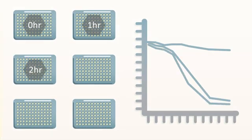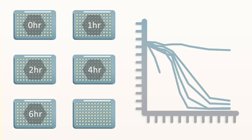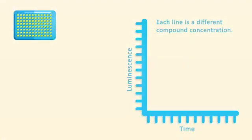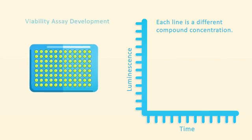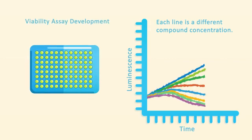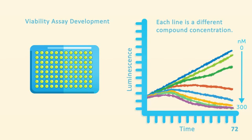Viability assay development using an endpoint method requires multiple plates. Assay development using a real-time method uses only one plate and much less reagent to measure cell viability continuously out to 72 hours using a simple plate-reading luminometer.